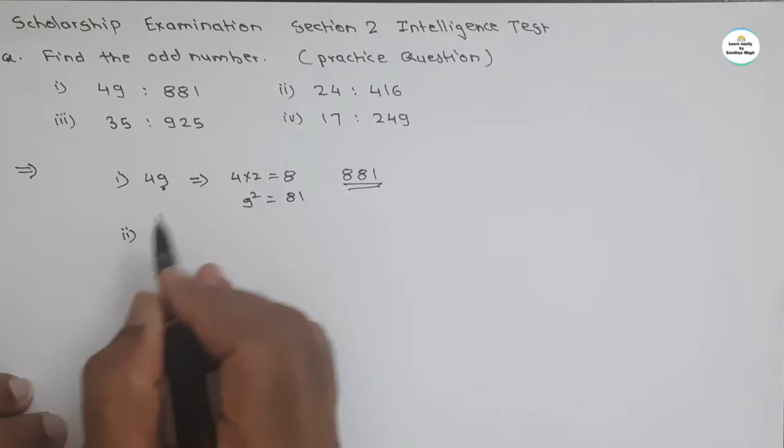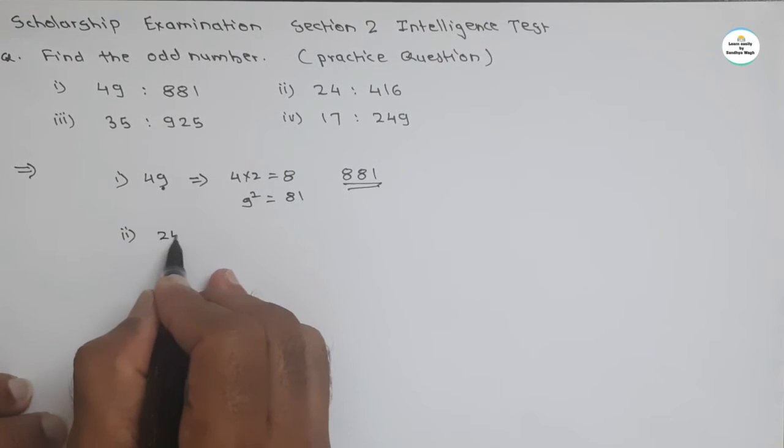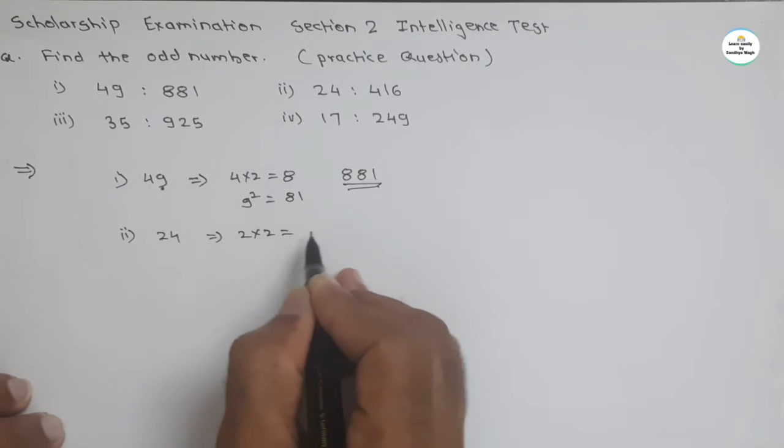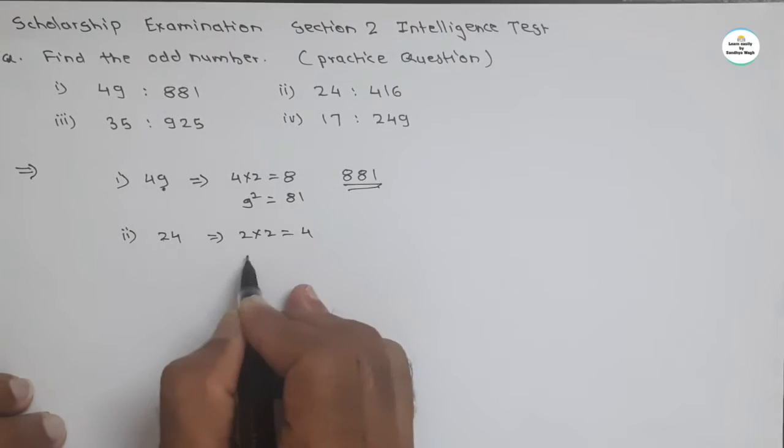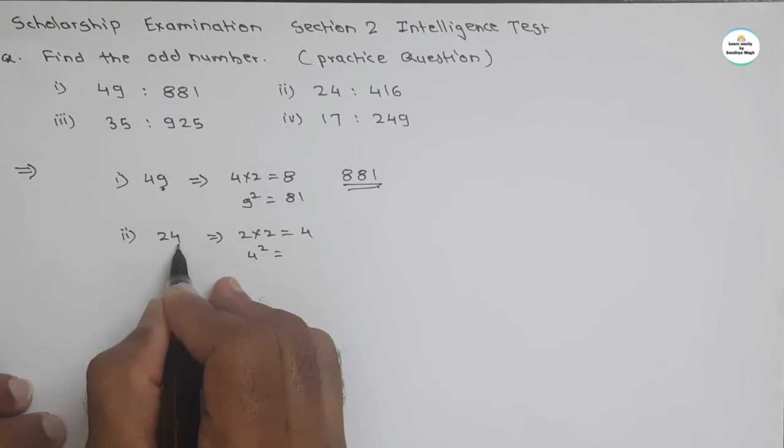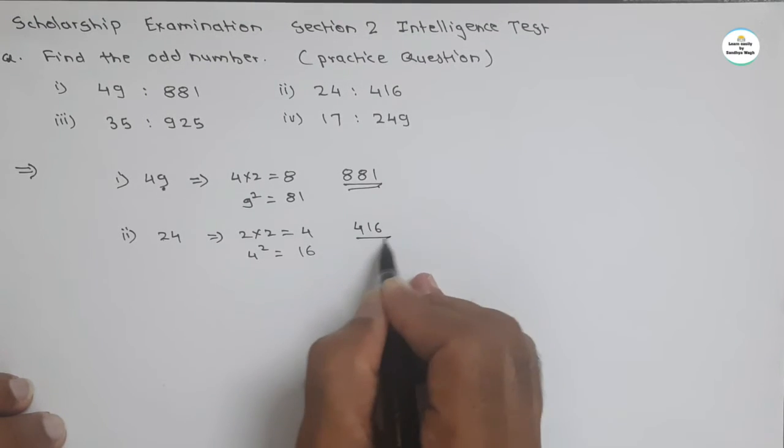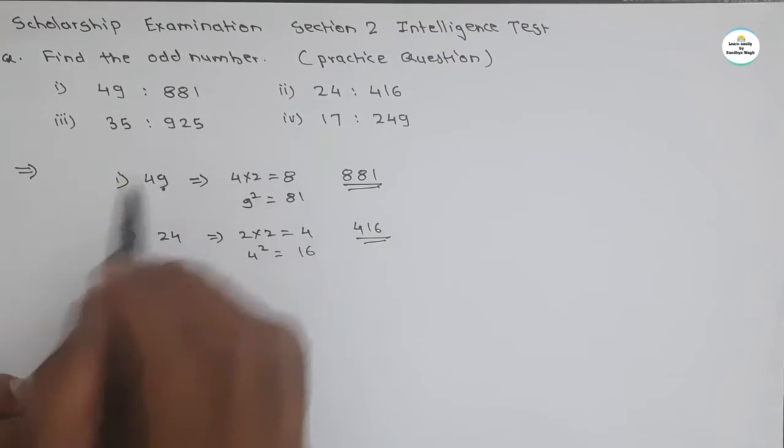See for the second number 24. If we multiply this 2 by 2, we get 4. And square of 4, this last digit, 16. 4, 1, 6. So this is same relation for first one.